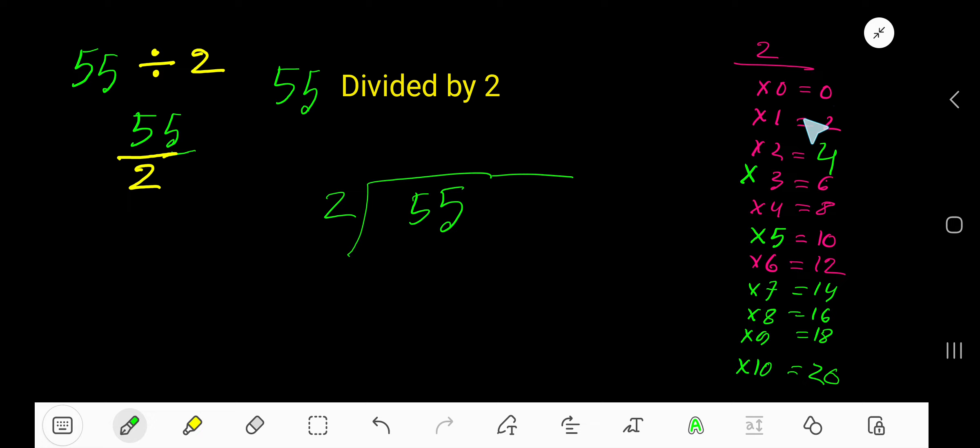2 times 0 is 0. 2 times 1 is 2. To get the multiplication table of 2, just add 2 with the previous step. 0 plus 2 is 2. 2 plus 2 is 4. 4 plus 2 is 6. 6 plus 2 is 8.